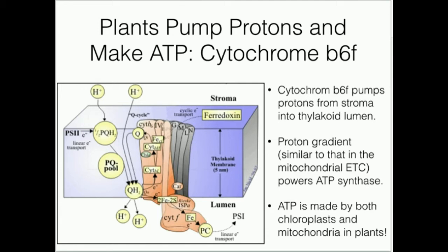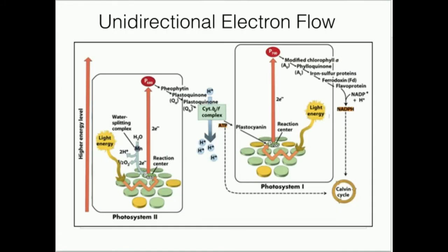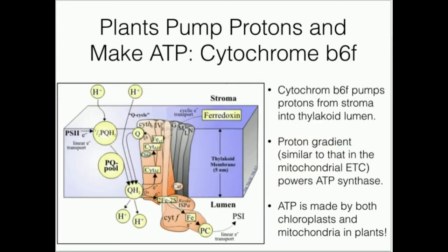This cytochrome B6F complex is receiving electrons ultimately from P680, but they pass through a series of electron acceptors and donors before finally being donated to cytochrome B6F. It uses the energy from those electrons to pump the protons.